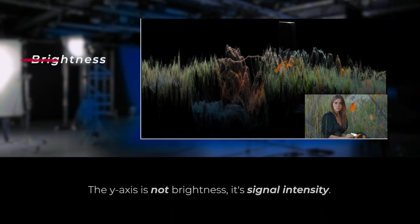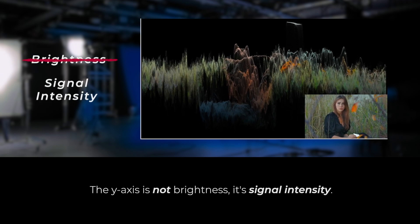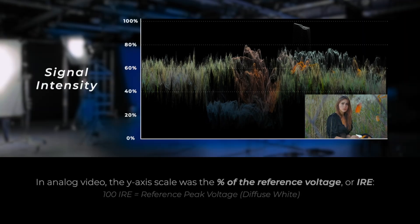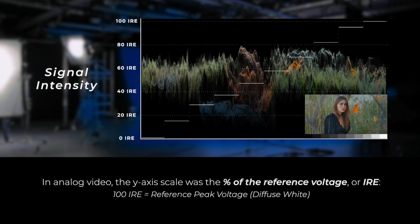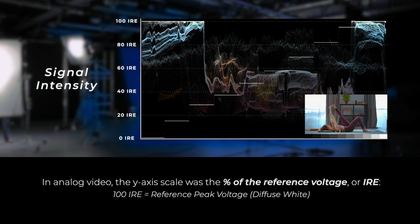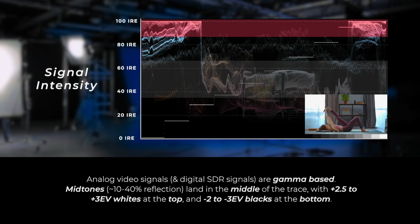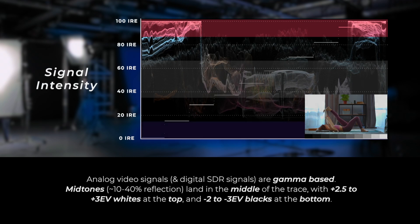Why is that? In our heads, we think of the y-axis as brightness, but it's not — it's the magnitude value of the signal, the data. In old analog terms, it was the intensity of the voltage as a percentage of 100% reference, or 100 IRE, representing diffuse white. These signals were gamma-based, so the middle tones landed in the middle of the trace. Whites, two and a half stops above the middle at the top, and blacks, three stops below the middle at the bottom.